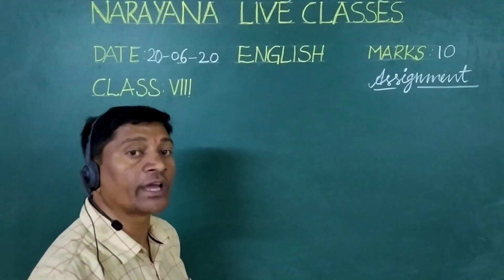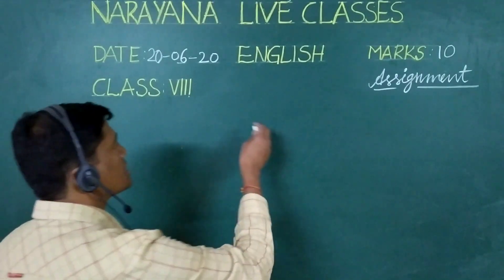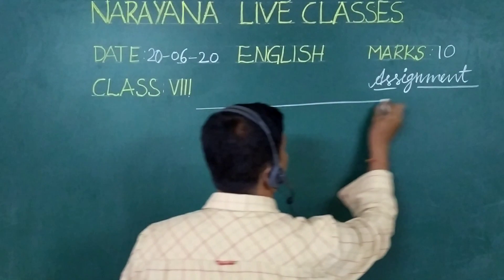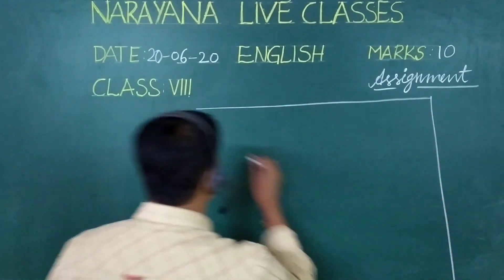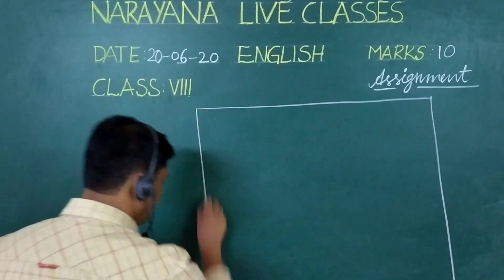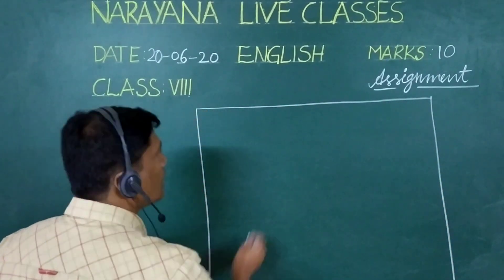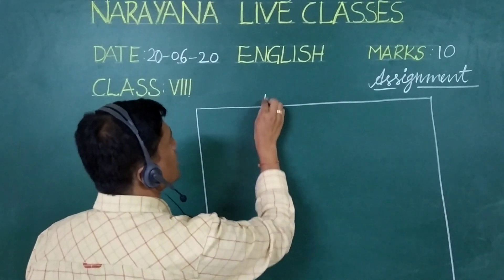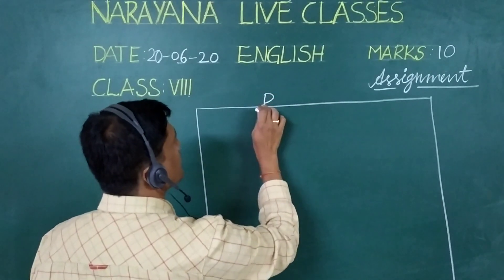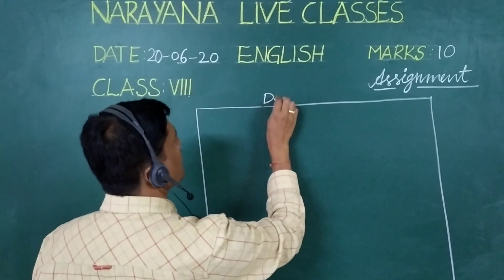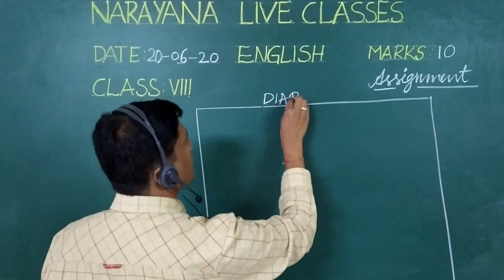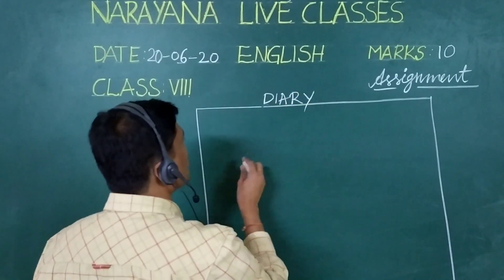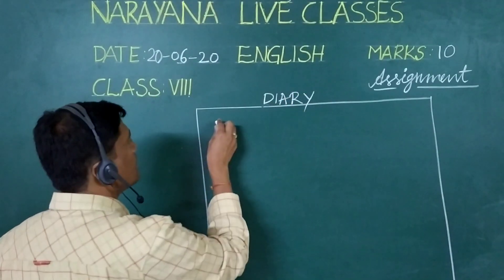Because the question says imagine that you are Oliver Twist. So first of all, for a diary entry, we have to draw the box — compulsorily. Now write the discourse name: Diary. Okay. Now, day, date, and time.